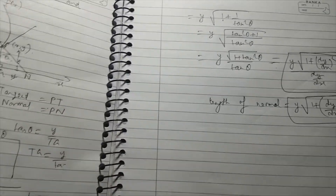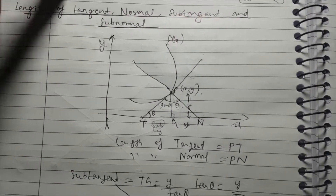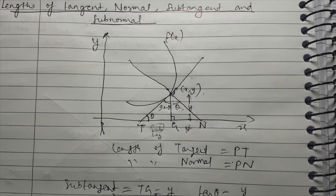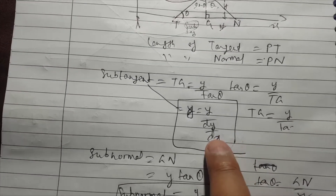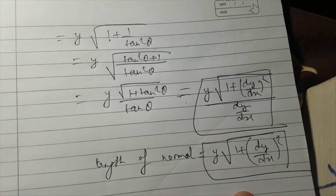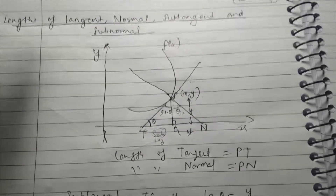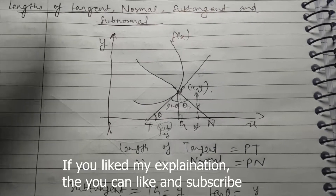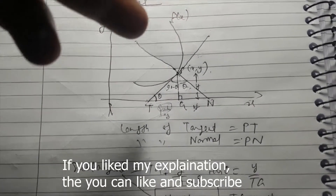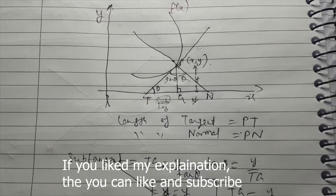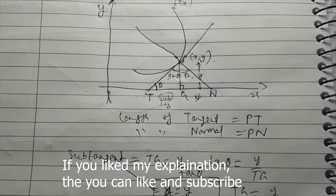So in this video I taught you how to calculate the four quantities: the length of the tangent, normal, sub-tangent, and sub-normal. You now have the formulas for all four. If you come across any question related to these, you should remember the formulas — and even if you don't, you can easily draw this diagram and calculate it yourself. That's it for today's video, bye bye, I will see you soon and upload the next video.